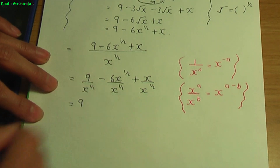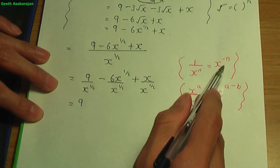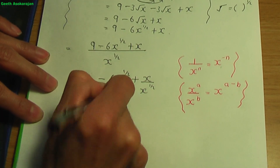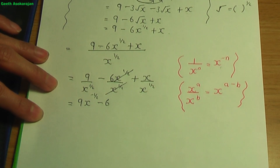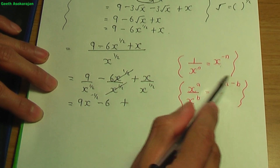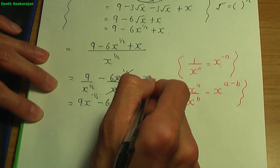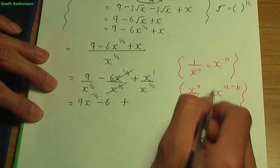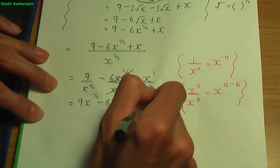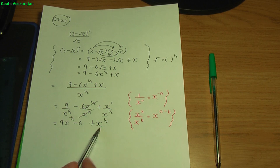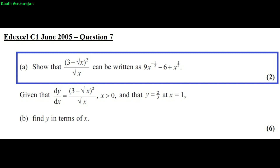So let's have a go. We have 9 — keep the 9 as it is. 1 divided by x to the half, according to the rule, is x to the power minus half. Minus 6, keeping the constant as is — 6x to the half divided by x to the half, you can cancel. Plus: x to the power of 1 divided by x to the power of half is x to the power 1 minus half, which is x to the half. So that completes part a — it's simplified.